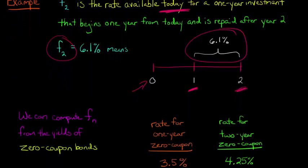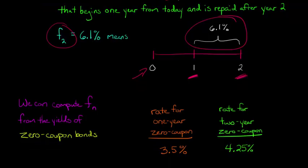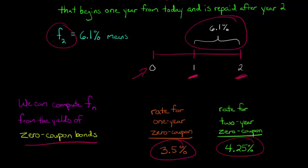We can go ahead and compute the forward rate. Obviously we just have a given in this example, but if we didn't know the forward rate for a given period, we could actually use yields from zero coupon bonds to calculate it. For instance, if we know the rate for a one-year zero coupon bond is 3.5%, and the rate for a two-year zero coupon bond is 4.25%, then we can actually back out the forward rate.